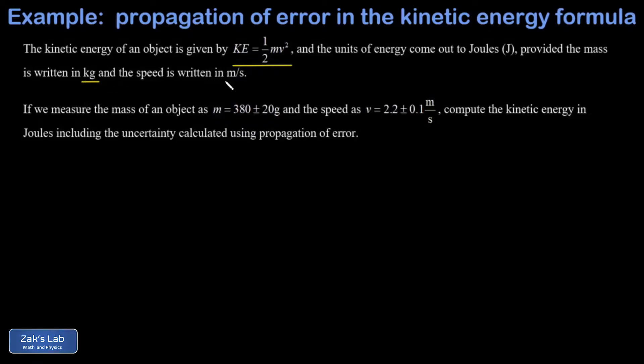We're told we measure the mass of an object with uncertainty to be 380 ± 20 grams. I want to convert that to kilograms, so that's 0.380 ± 0.020 kilograms.